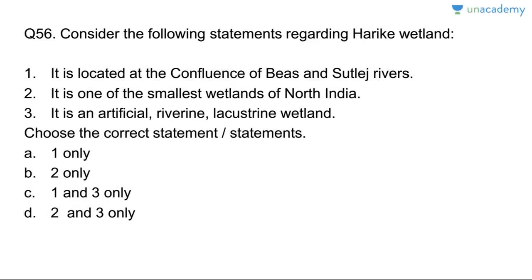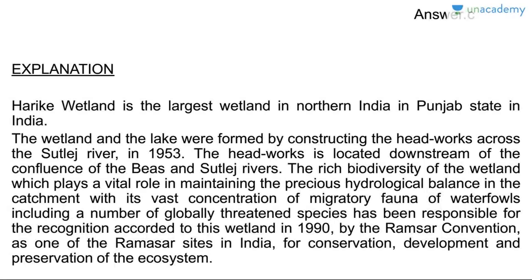Question fifty-six: Harike Wetland. It is located on the confluence of the Beas and Sutlej rivers — yes. It is in Punjab — correct. It is one of the smallest wetlands of north India — wrong; it is the largest wetland in northern Punjab. It is an artificial riverine and lacustrine wetland — correct. Answer is C, one and three. The wetland was formed by constructing headworks across the Sutlej River in 1953. It is recognized as a Ramsar wetland — Ramsar is in a Middle East country.